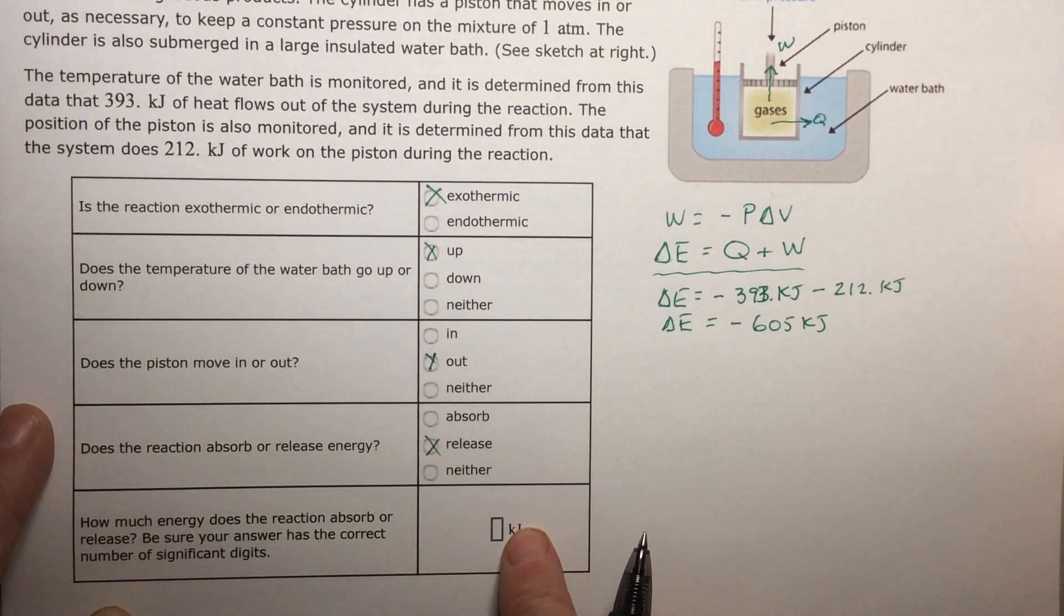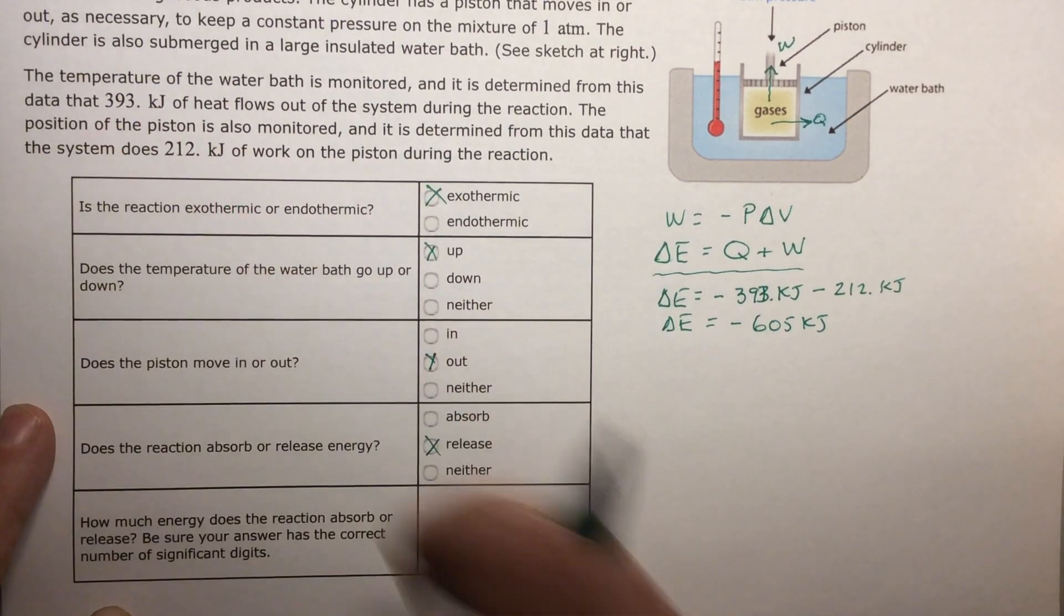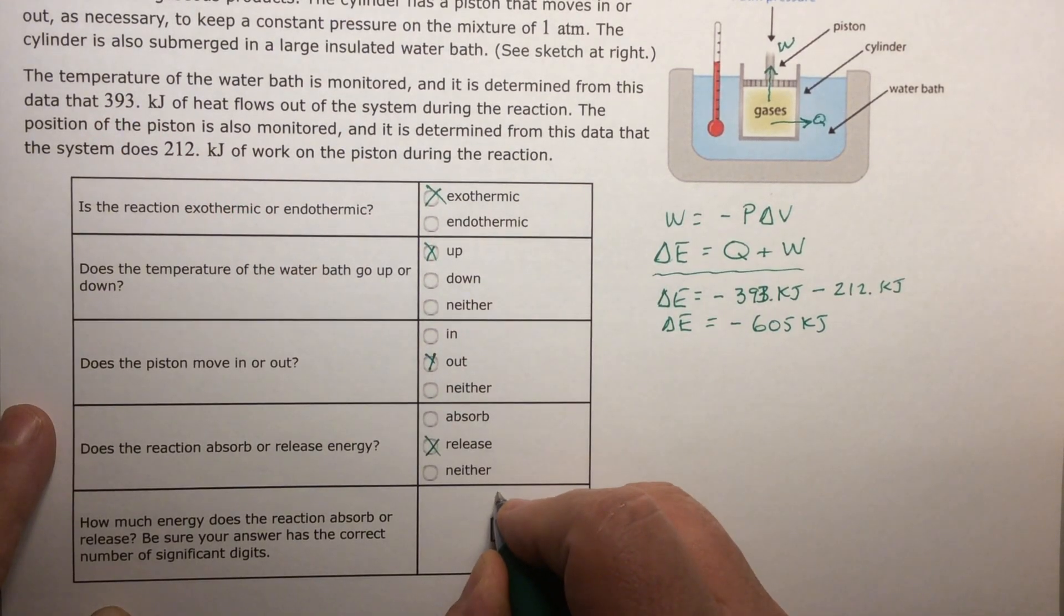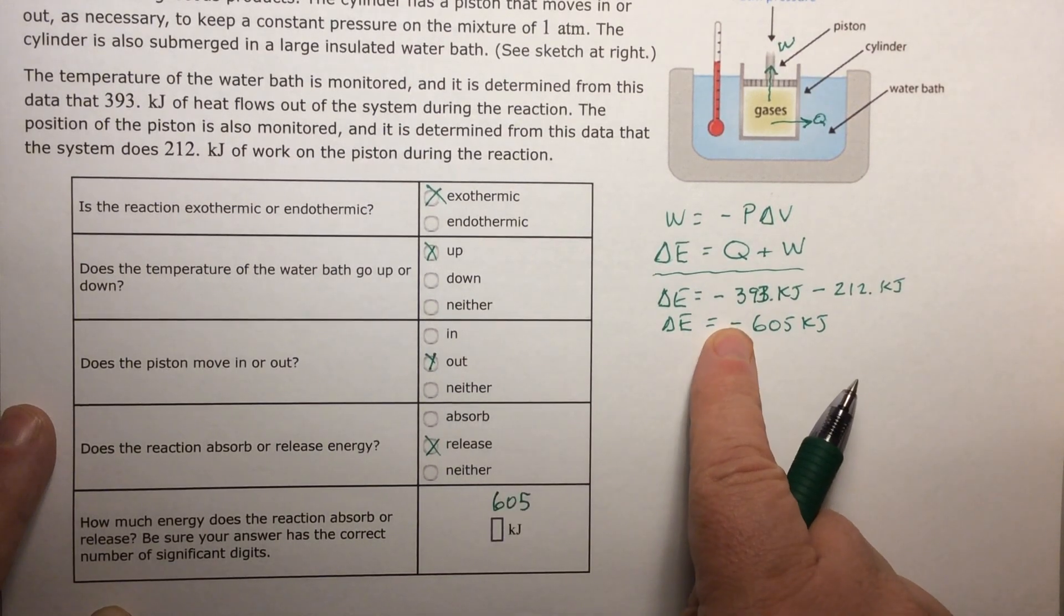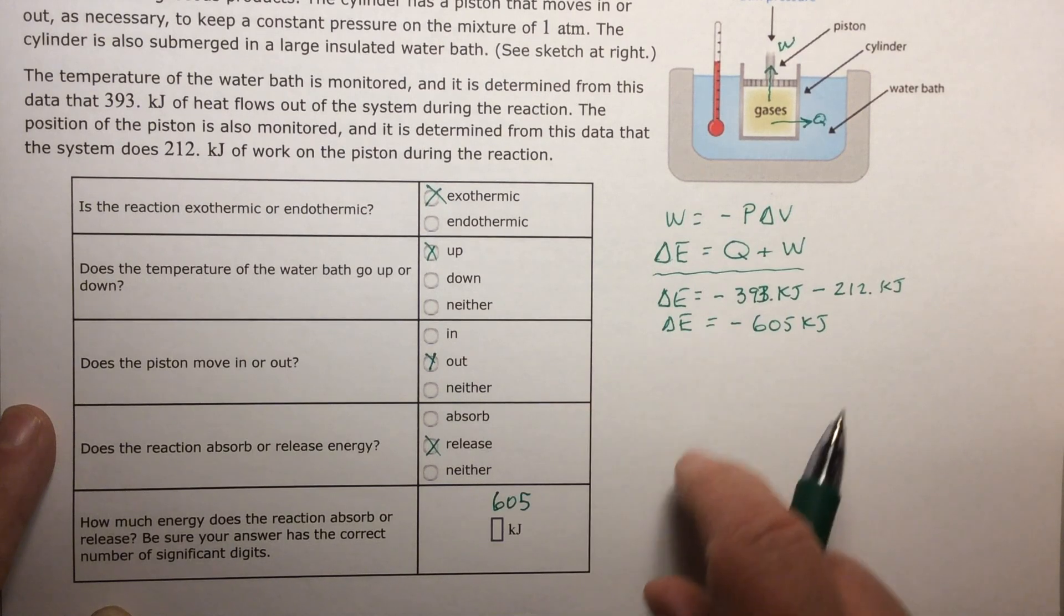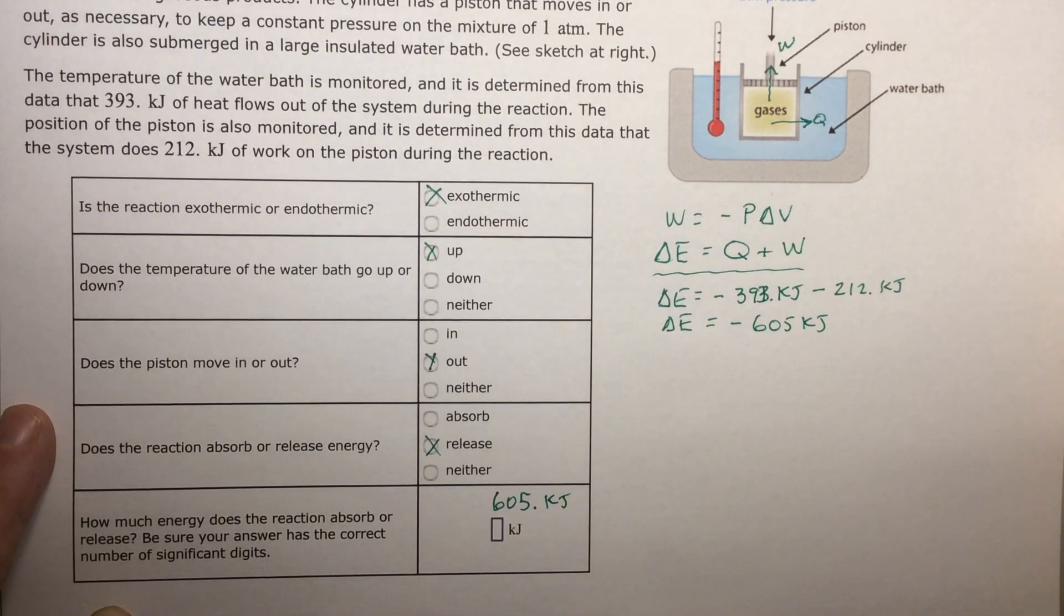The last one is, how many kilojoules does the reaction absorb or release? Be sure your answer has the correct number of significant digits. Let's check that first. We have 605. That's three. That's three. That's three. Yeah, that's good. So we have 605 is how much it released. You won't put the negative there because it's asking how many did it release. Releasing is the negative. That's what it means, release. If positive, it would mean it would gain. So 605 point kilojoules. Thank you.